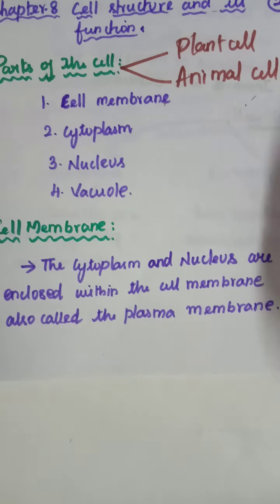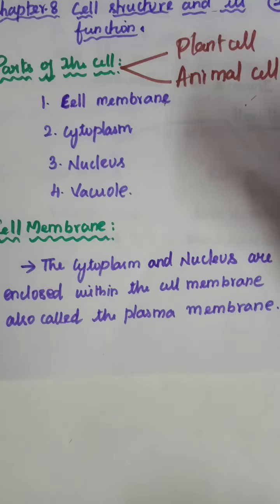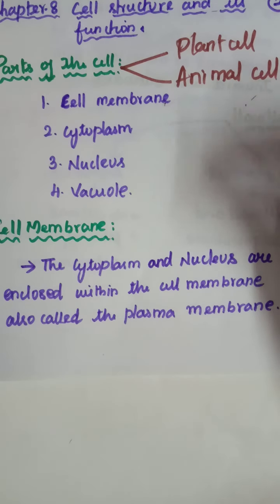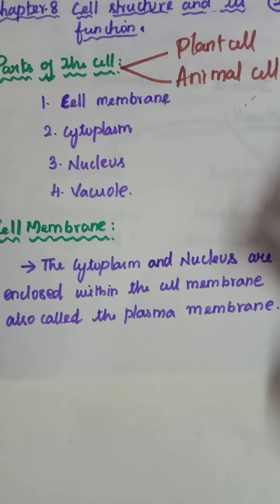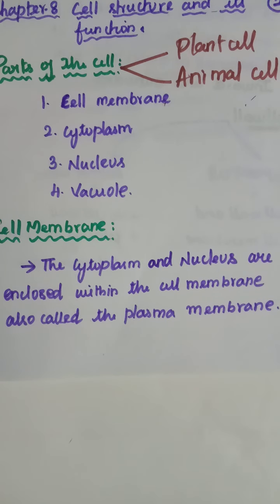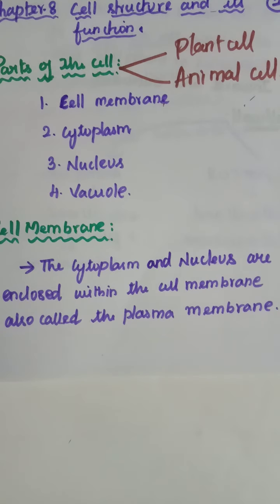Cytoplasm, nucleus, and vacuoles are important parts. The cell membrane is an important part. This membrane separates the cell from one another and also from the surrounding medium. This plasma membrane is porous and allows the movement of substances or materials both inward and outward.